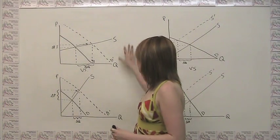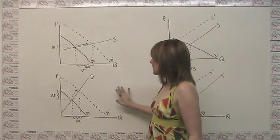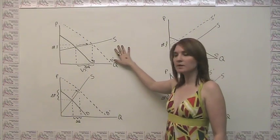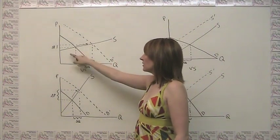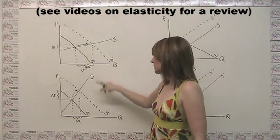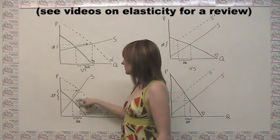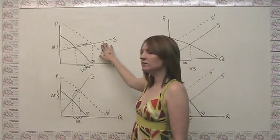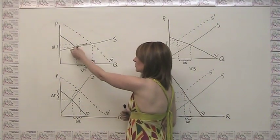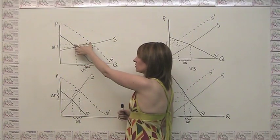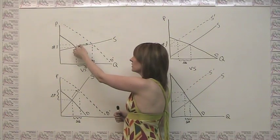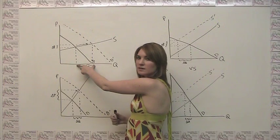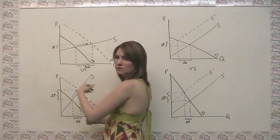On the left you see two diagrams. In each diagram you see the same demand curve and the same change in demand. The only difference is that in the first one you have very elastic supply, and in the second one you have very inelastic supply. In the first case with elastic supply, because we're moving from one equilibrium to another along the same supply curve, and because that supply curve is elastic,